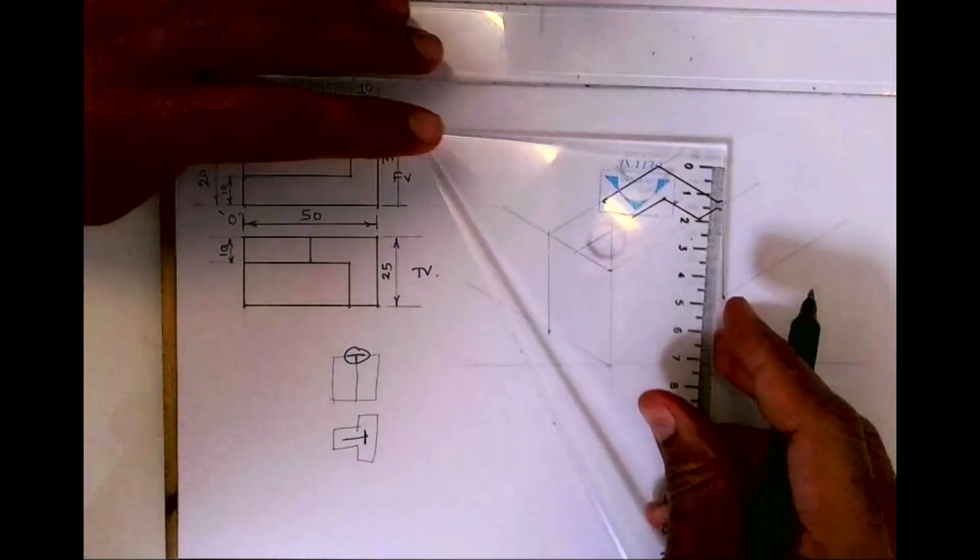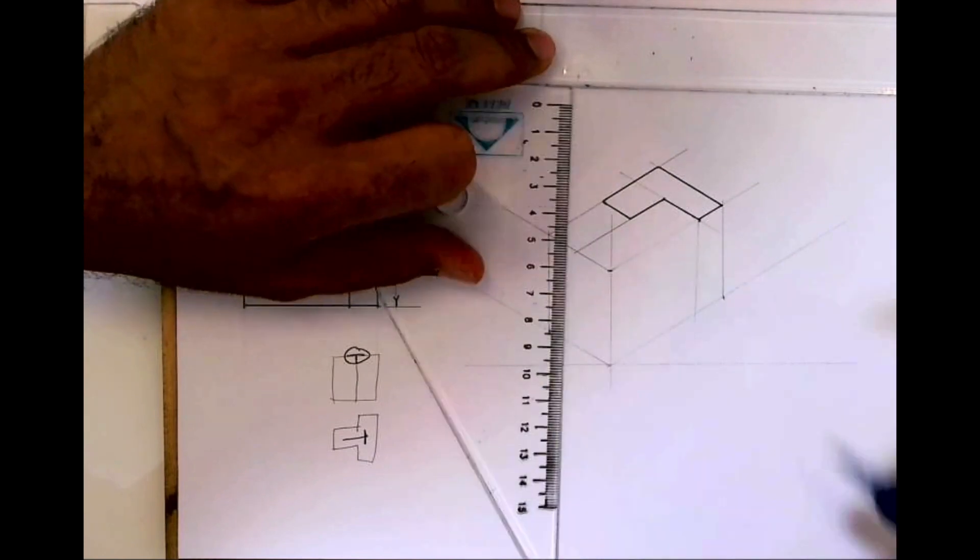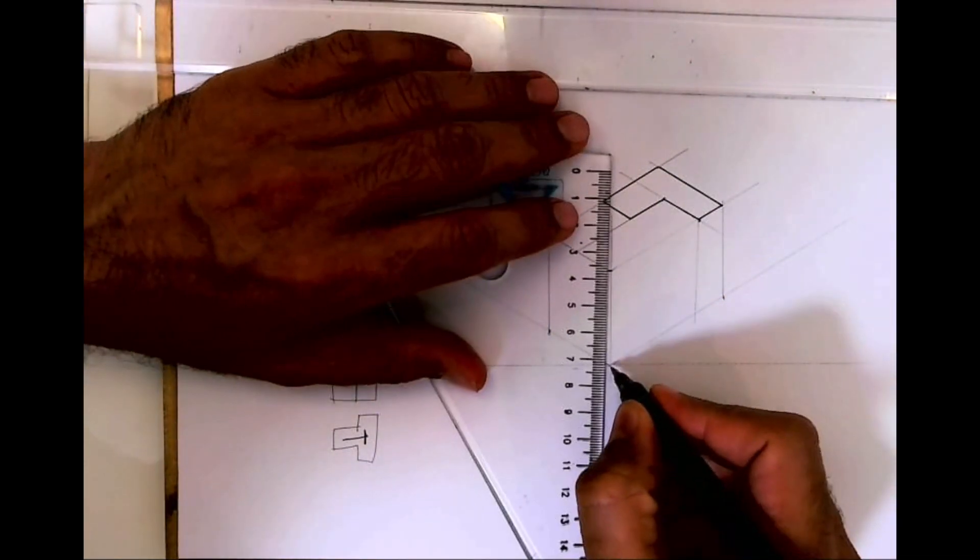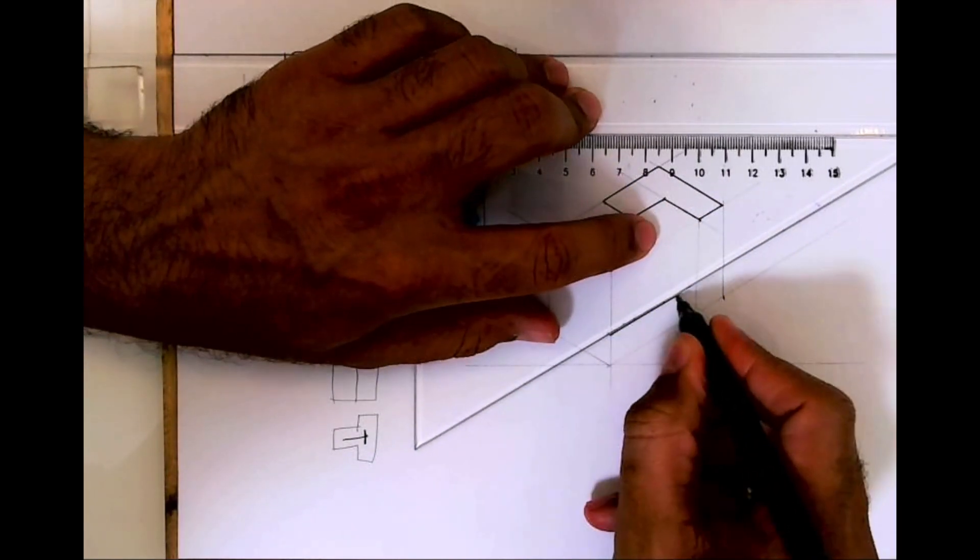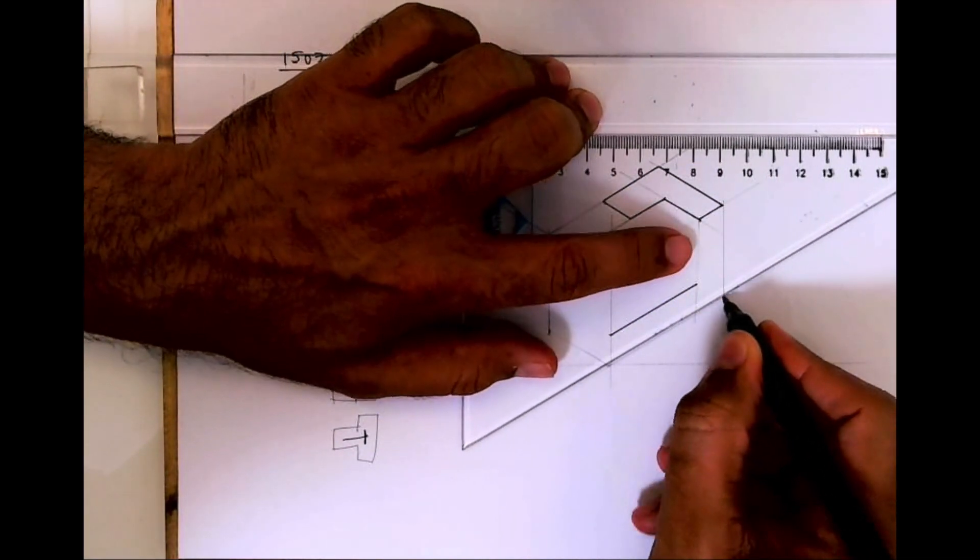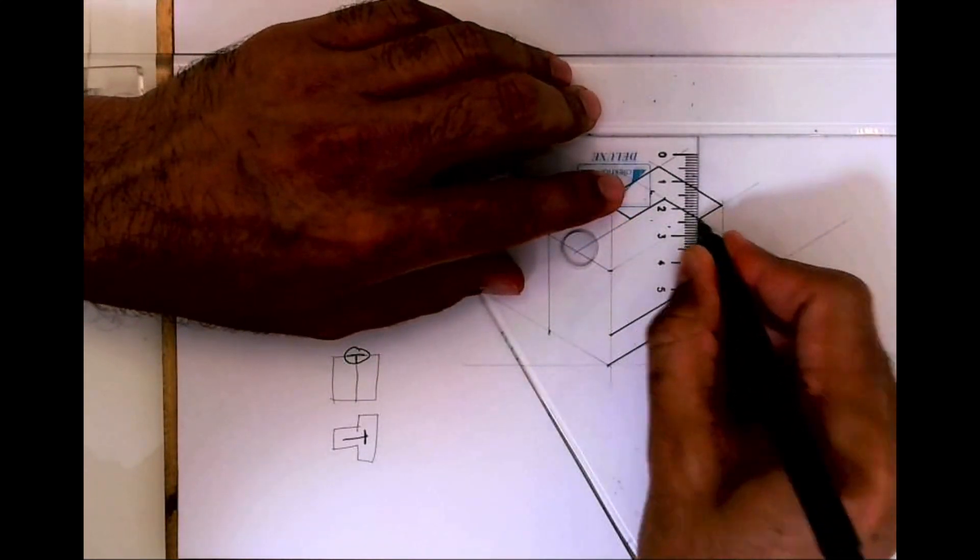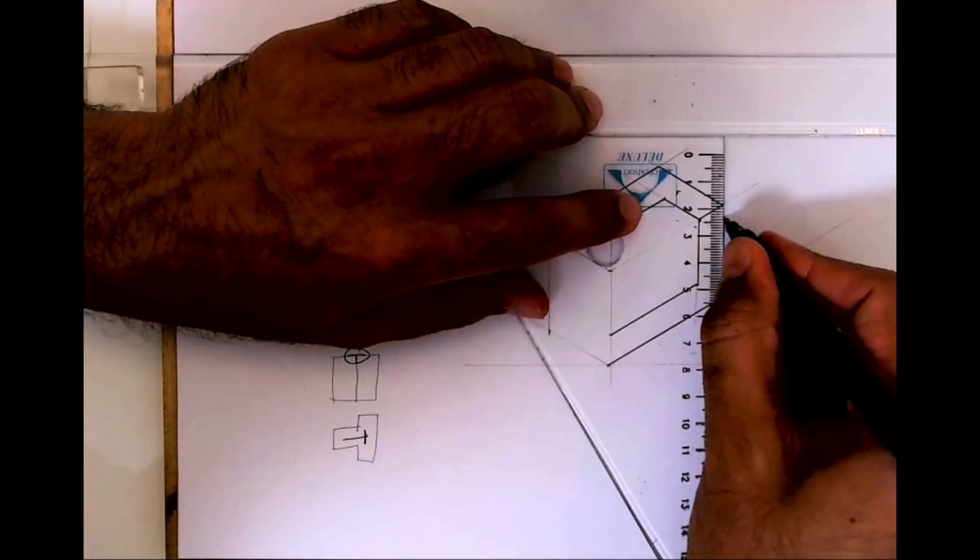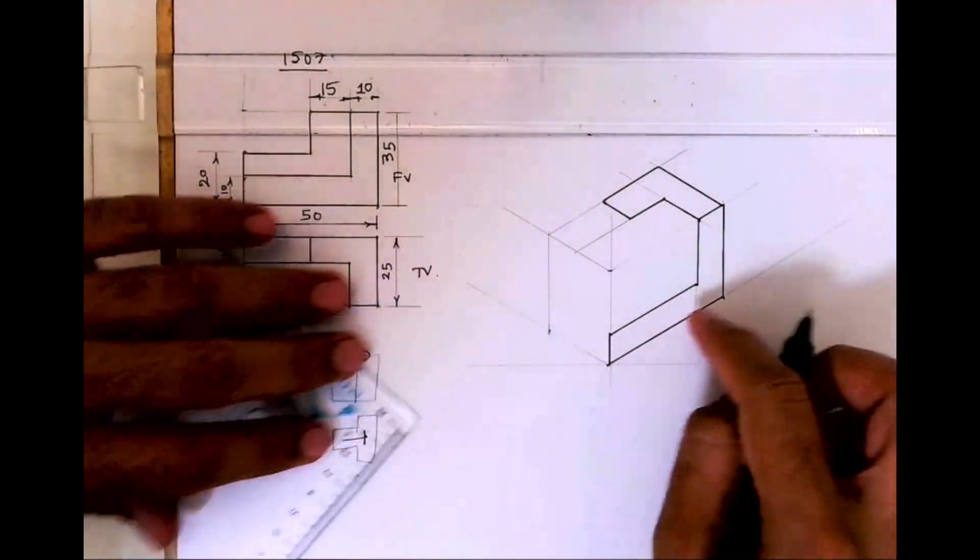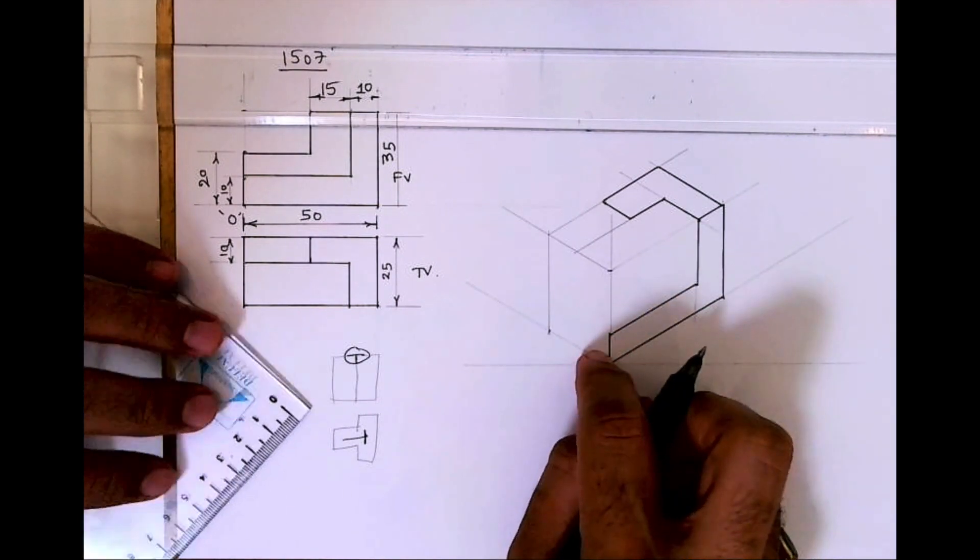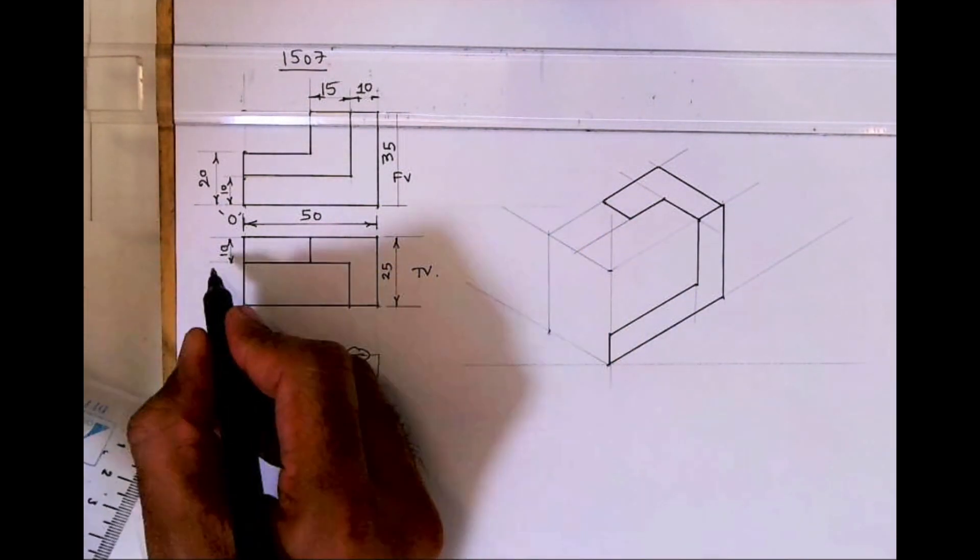Then we can draw this part in front view. See this part one, so this is how to look and shape. This part, now this part is behind. How much I have to go behind? 15, 25 minus 10.